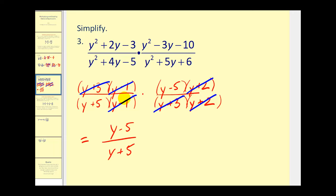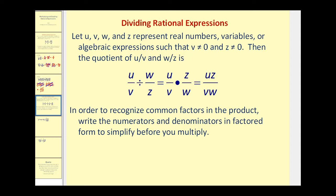Let's take a look at division now. The main thing to remember about division of rational expressions is that we convert them to multiplication. So instead of dividing by w over z, we will multiply by the reciprocal, or multiply by z over w. Once we convert the problem to multiplication, we will follow the same steps as in the previous examples.